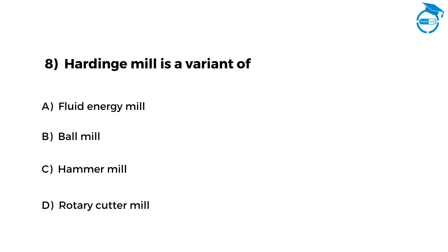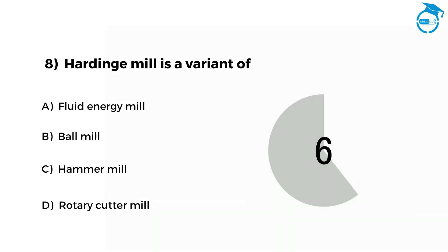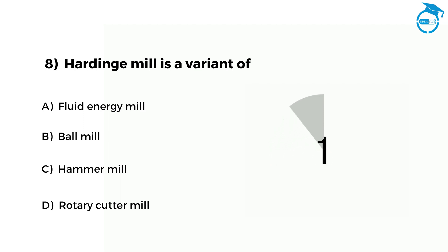Hardinge mill is a variant of. Option A: fluid energy mill. Option B: ball mill. Option C: hammer mill. Option D: rotary cutter mill. Your time starts now. Post your answer in comments. The right option is B, that is ball mill.